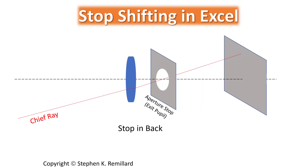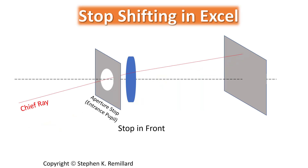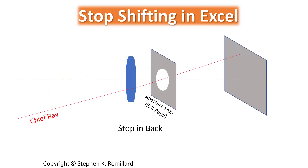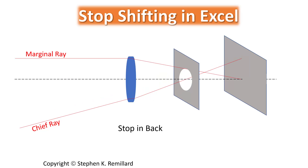In front of the lens, the aperture stop has no effect on the marginal ray — the marginal ray height is already set at the radius of the aperture. But behind the lens it will change, and we will see that in our simulations.